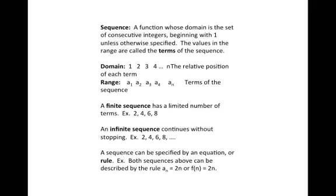There are finite sequences and infinite sequences. Finite sequences have a limited number of terms, so like 2, 4, 6, 8 and that's it. An infinite sequence keeps on going — it continues without stopping, so like 2, 4, 6, 8 on and on and on.